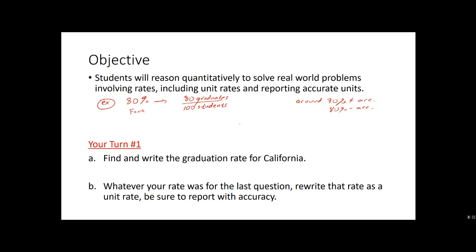So let's look at Your Turn #1. Find and write the graduation rate for California. What's in front of you is one of the most powerful devices in history. I think personally the internet is one of the best things that ever happened to our species. So go ahead and Google it. What is the graduation rate for high school for California. Find that rate, and then see if you can rewrite that rate as a unit rate, which is what I did in my example. And try to report with accuracy.